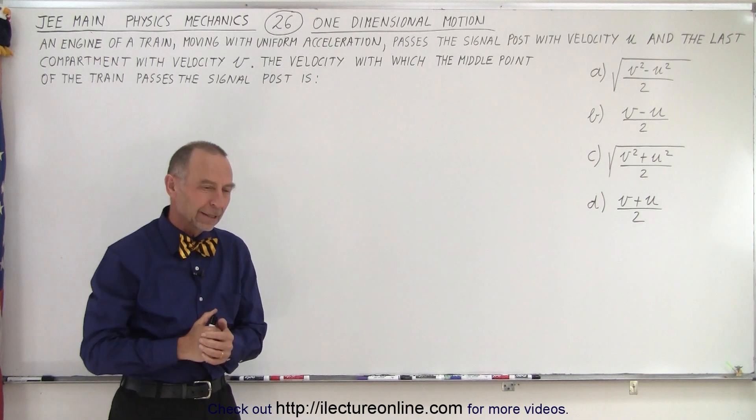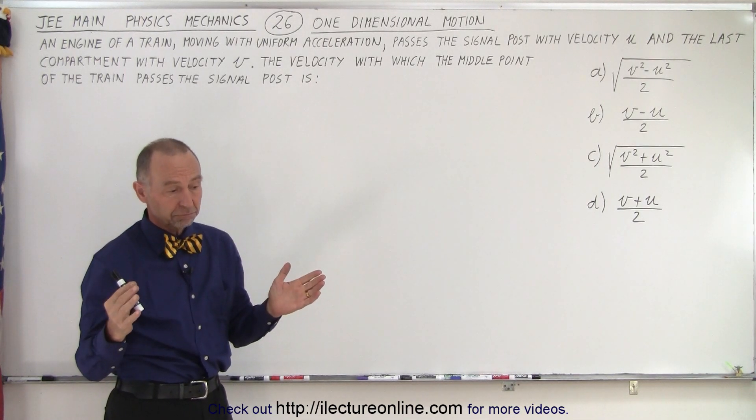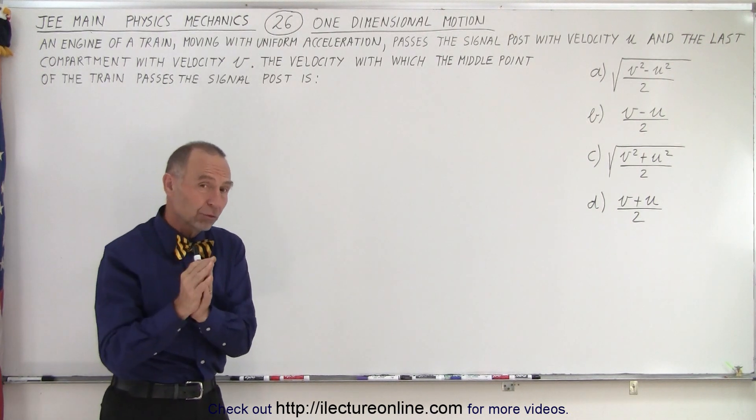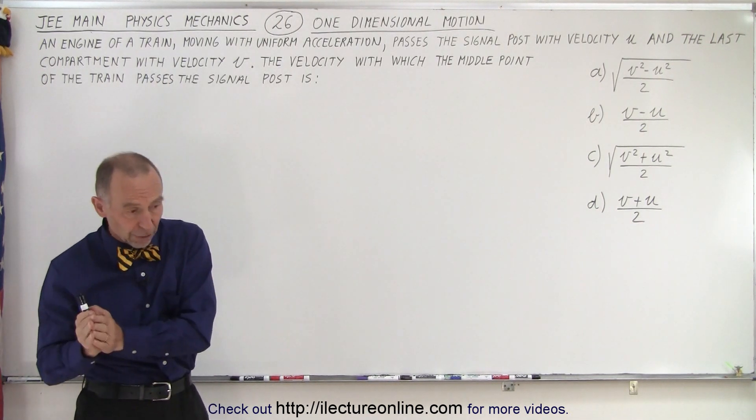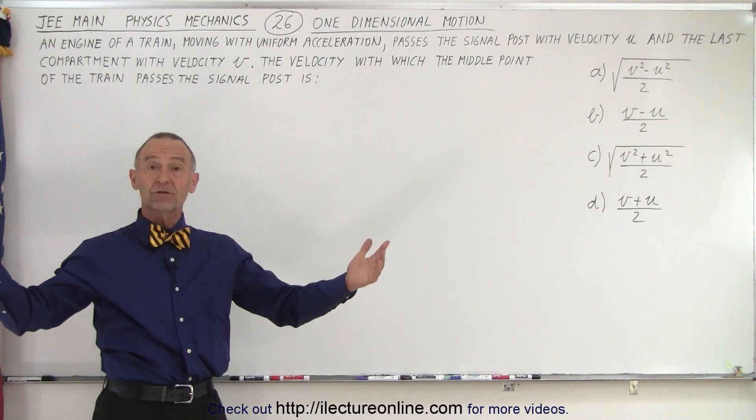Now, the reason why it's deceiving is you would say, well wait a minute, if the beginning of the train passes the post with velocity u and the end of the train with velocity v, and now we want to know the velocity in the middle of the train, is it simply the average?